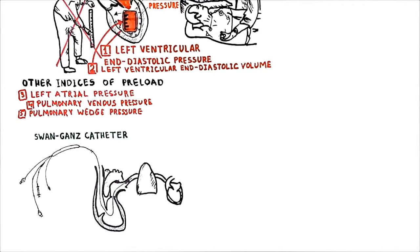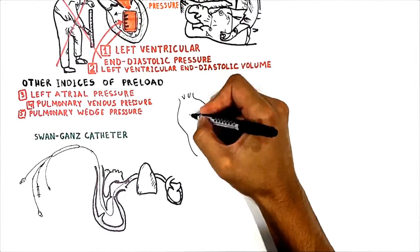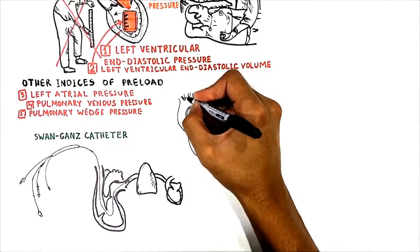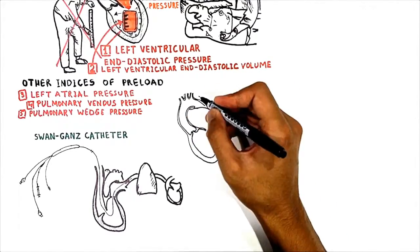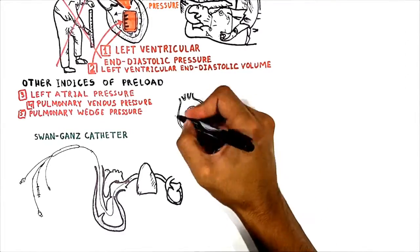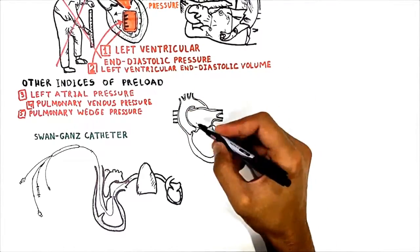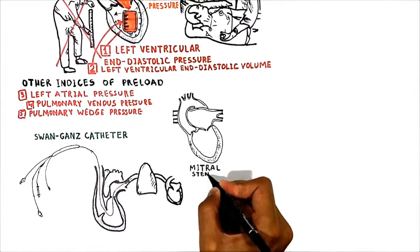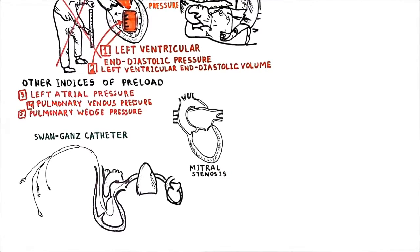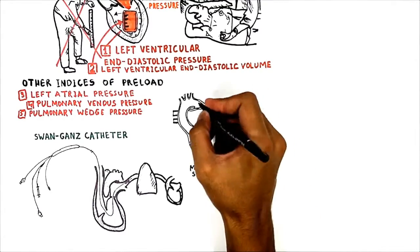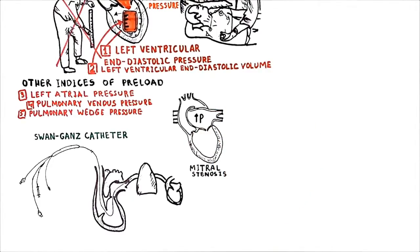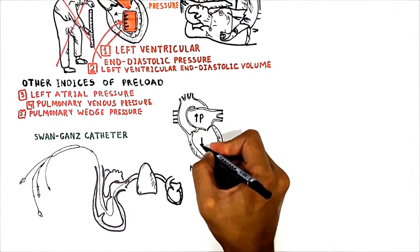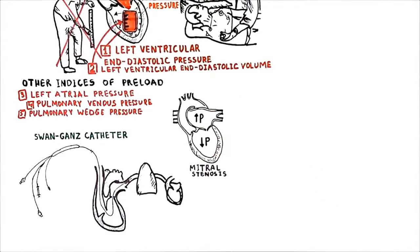The balloon is then deflated and the catheter removed. However, in some cases such as in mitral stenosis, pulmonary wedge pressure is not a good index of left ventricular preload, because mitral stenosis causes increased pressure upstream in the left atrium and pulmonary veins, whereas downstream in the left ventricle it decreases pressure.